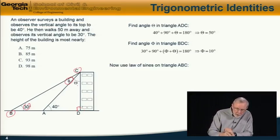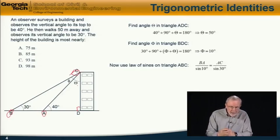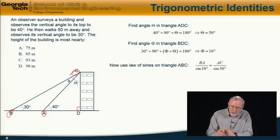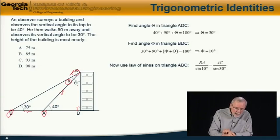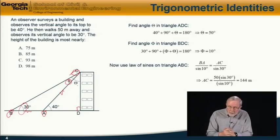Next, we'll use the law of sines on triangle ABC to find the length of the inclined side AC. We have BA, this length, divided by sine phi, equals AC divided by sine 30 degrees. So rearranging, AC equals 50 sine 30 degrees divided by sine 10 degrees, which equals 144 meters.